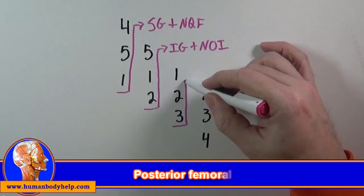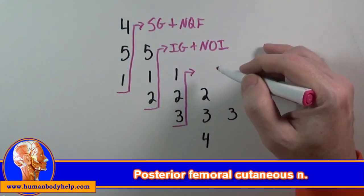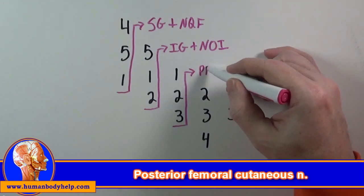This next group, S1, S2, and S3, contribute to the posterior femoral cutaneous nerve.